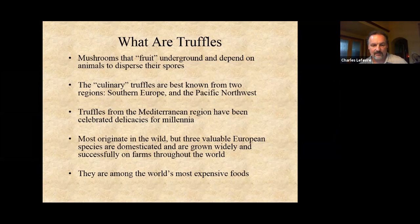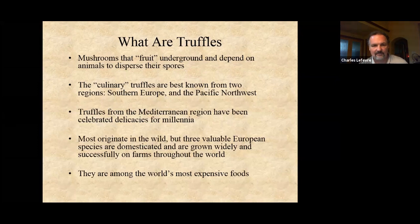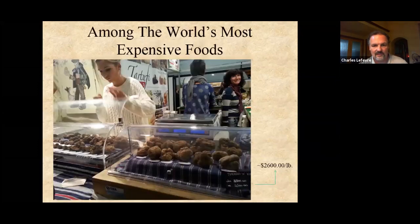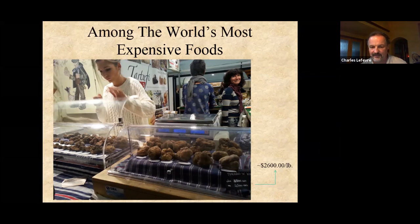Truffles have been famous, celebrated delicacies for thousands of years. Most come from the wild, but a few are now widely and successfully cultivated on farms all around the world. They're among the world's most expensive foods. A photo taken at the Alba Truffle Festival in 2014 shows a price of about $2,600 a pound, which is in the ballpark for Italian white truffles. Some of those truffles in the case probably weigh an entire pound, and the smallest is probably a quarter pound — there's a fortune in that case.